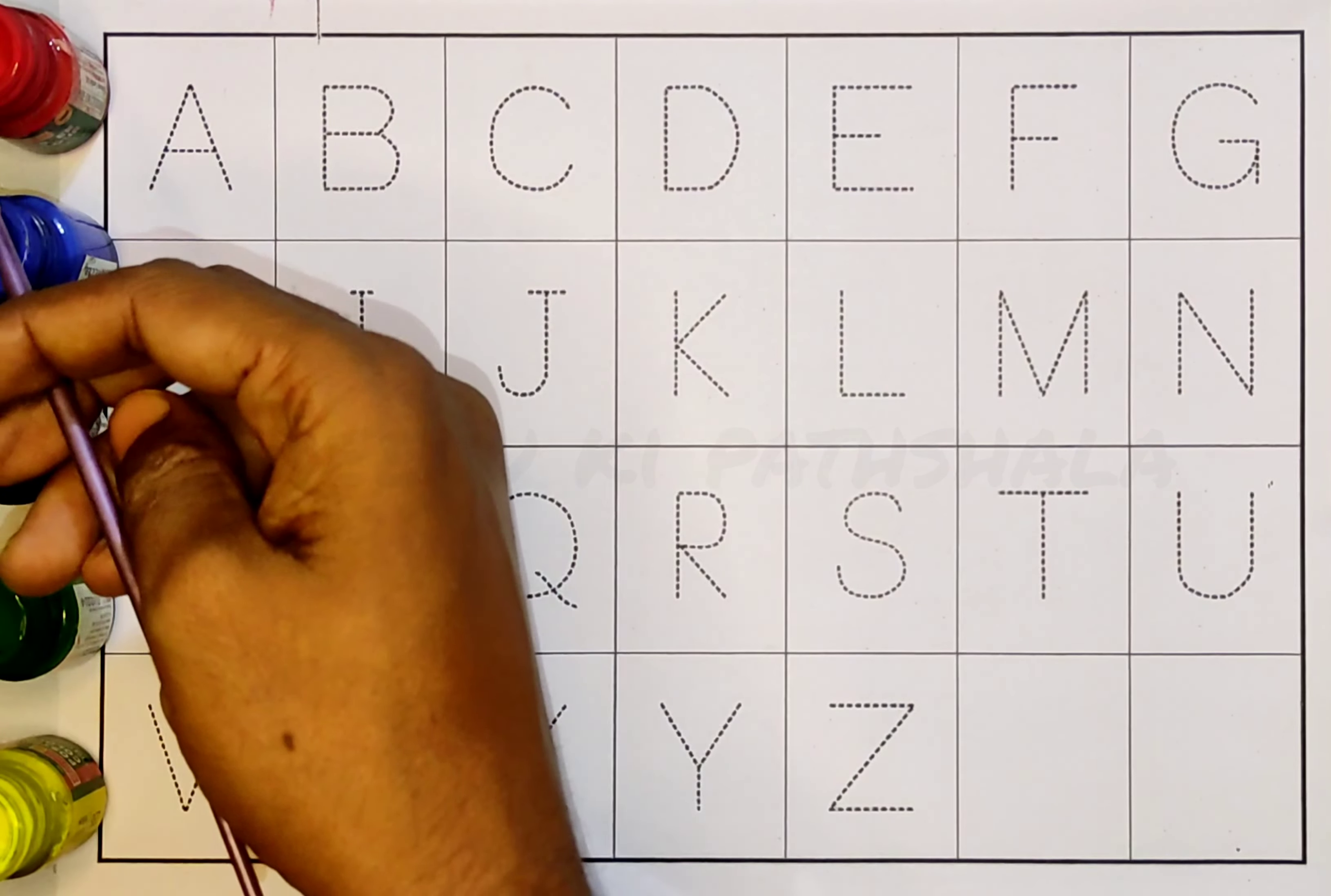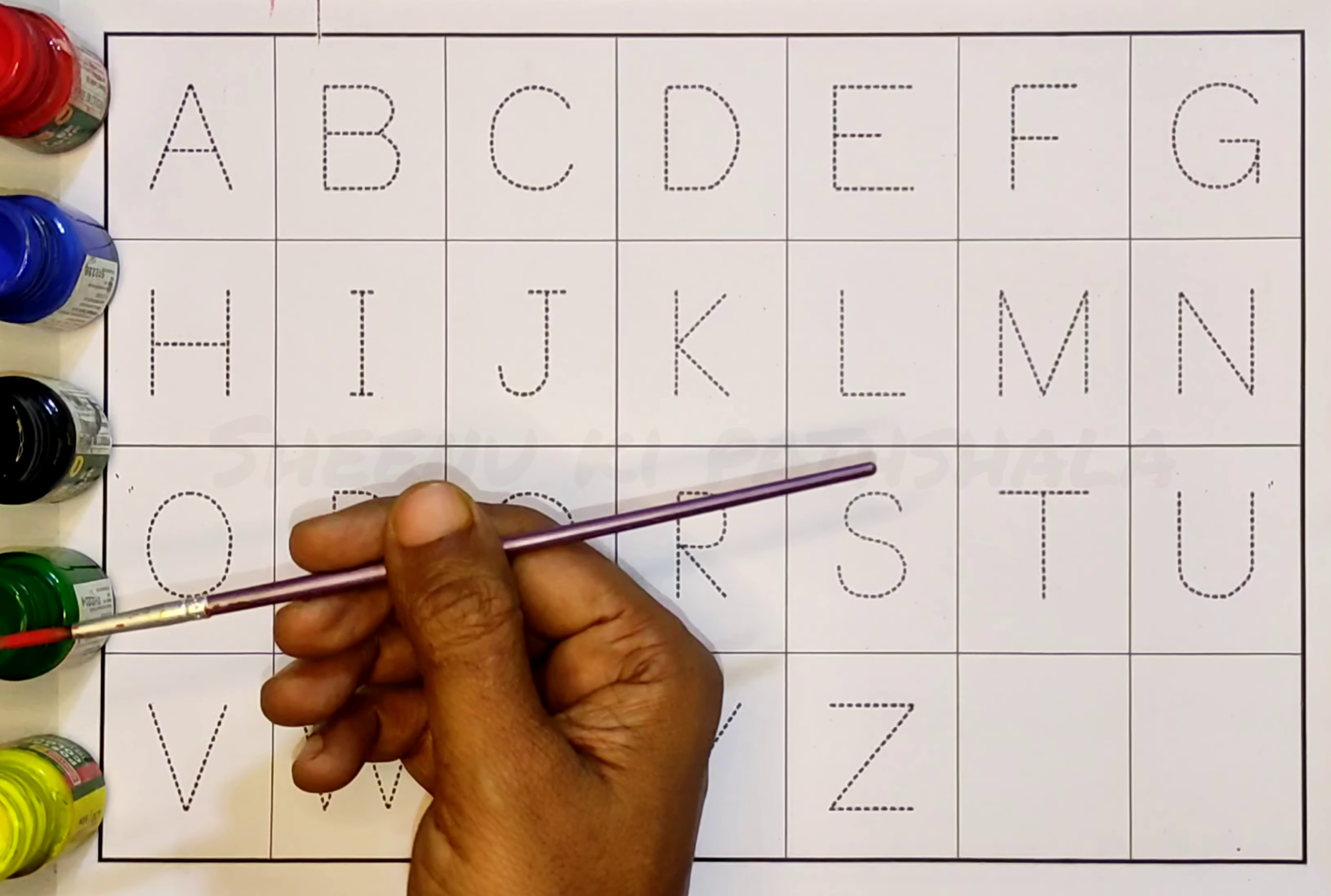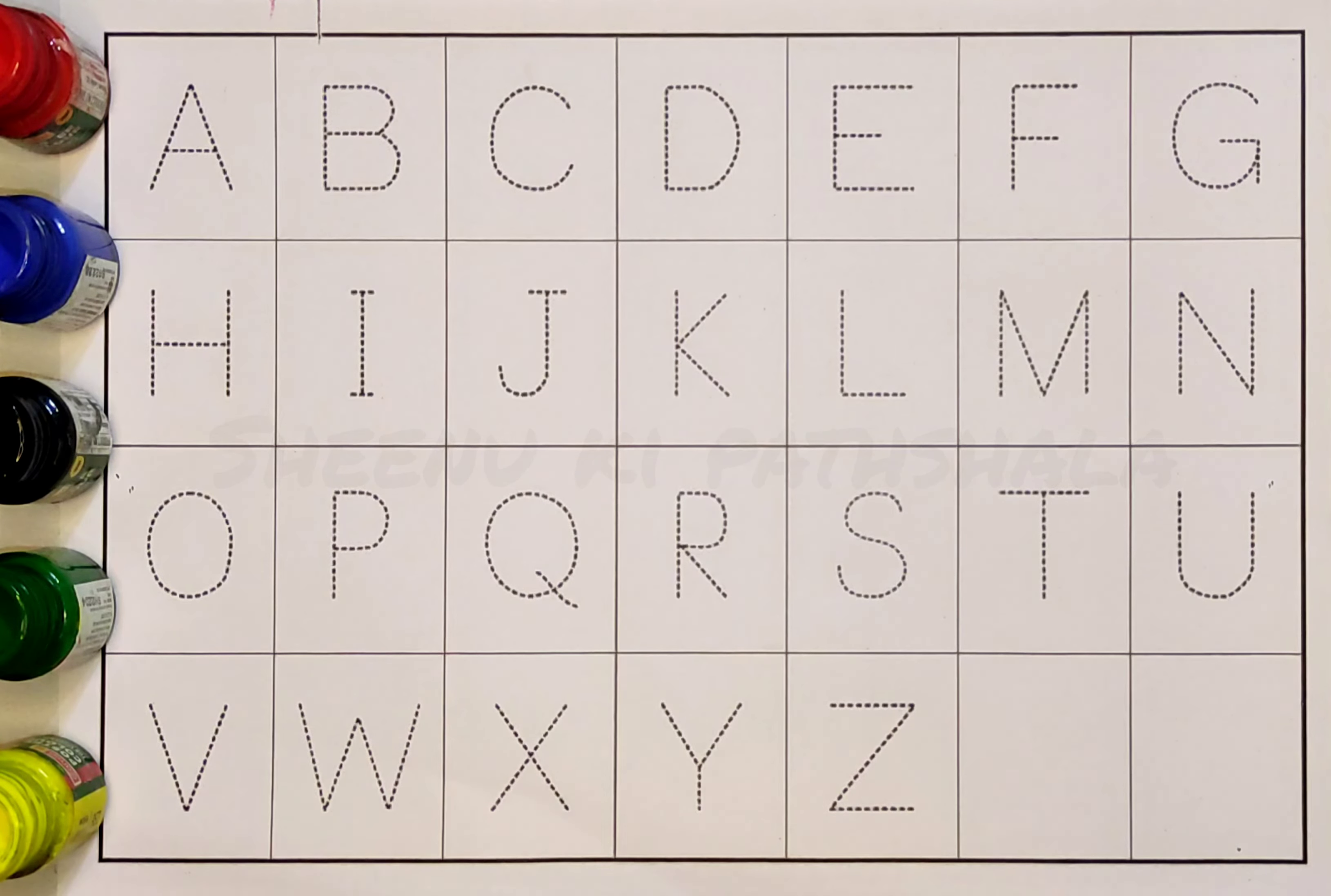Red color, blue color, black color, green color, yellow color. Today we are going to learn ABCD in capital letters. Let's start.